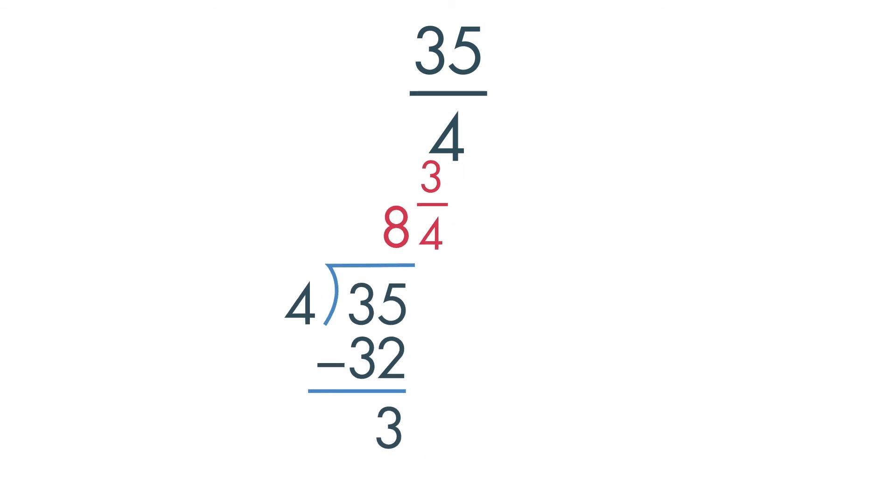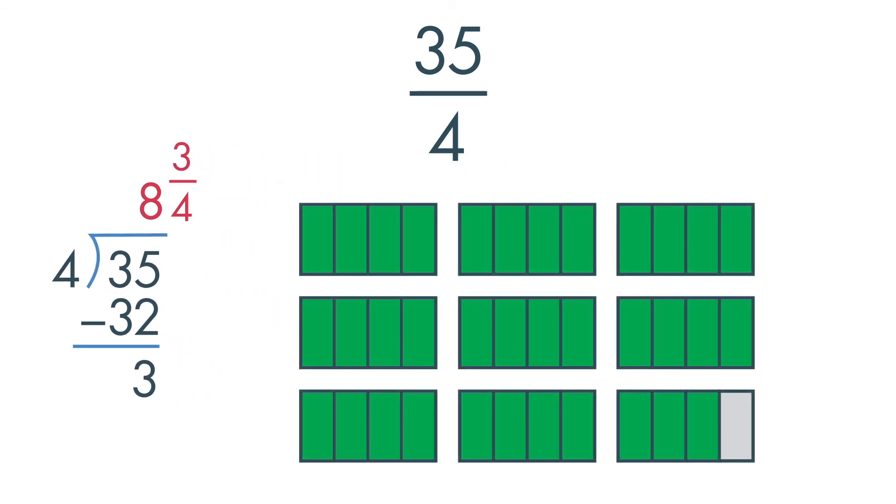Let's check our answer. Here are 35 fourths. 8 of the rectangles are completely shaded and 3 of the 4 sections are shaded in the last rectangle. So, our mixed number is 8 and 3 fourths.